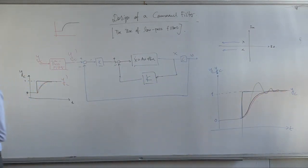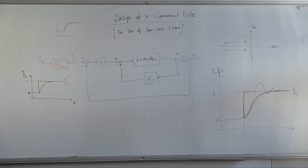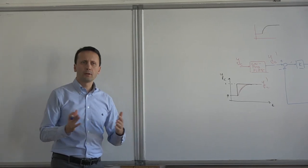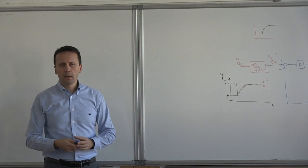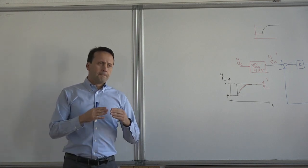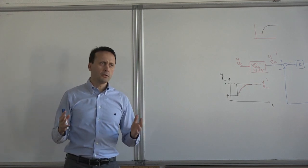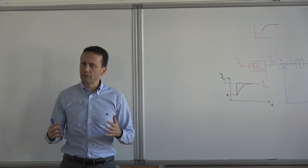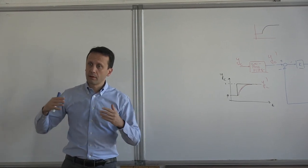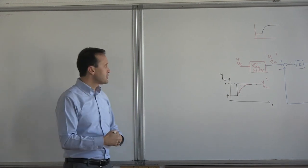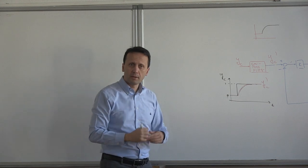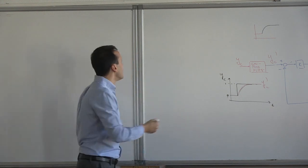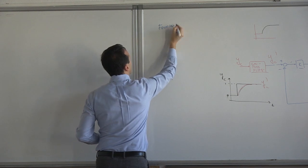A low-pass filter passes the low frequencies and removes the high frequencies. Where does this low-frequency / high-frequency concept come from? If you remember, you can express a periodic signal as a Fourier series. Any periodic signal can be expressed as a Fourier series — it has sines and cosines in it. You set up these sines and cosines in terms of frequencies. Please look it up. A Fourier series expresses a periodic signal in terms of frequency components.